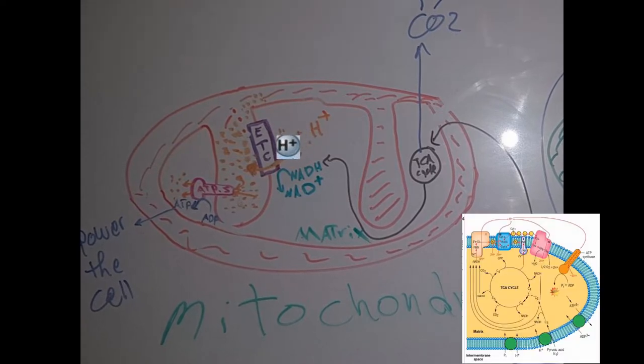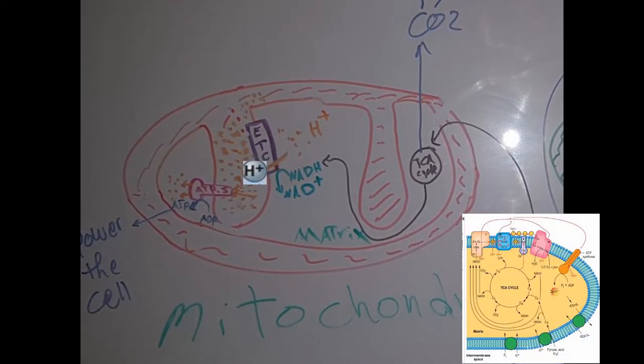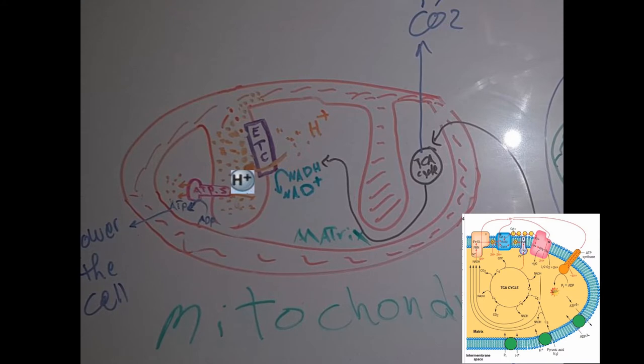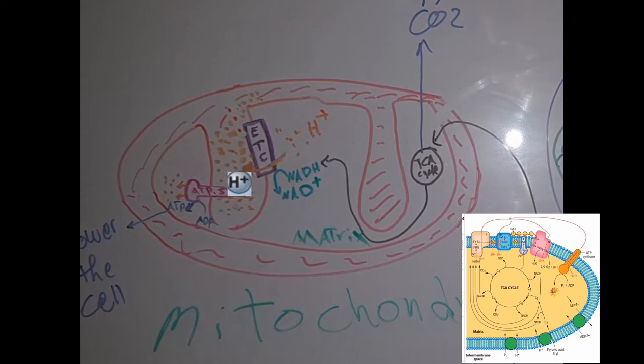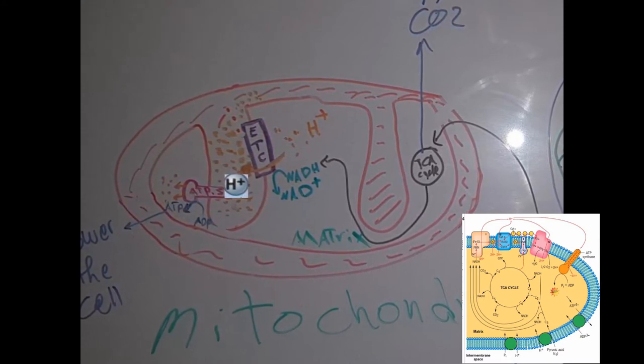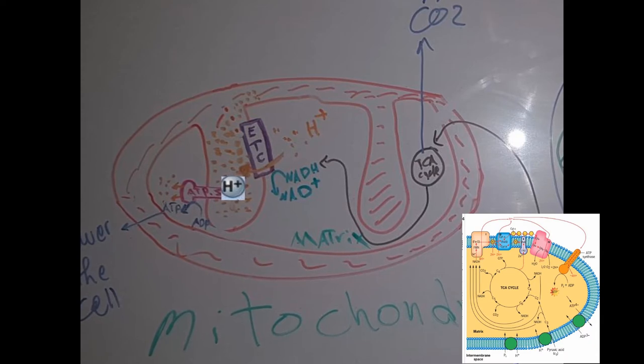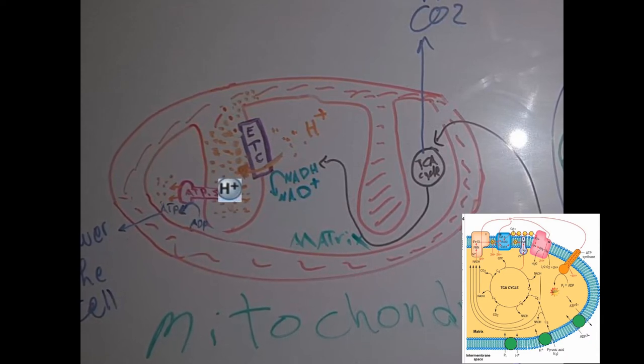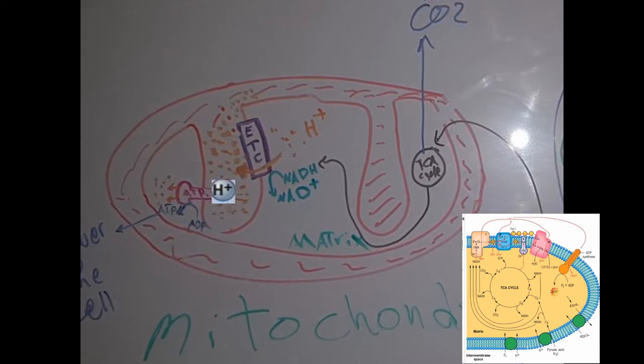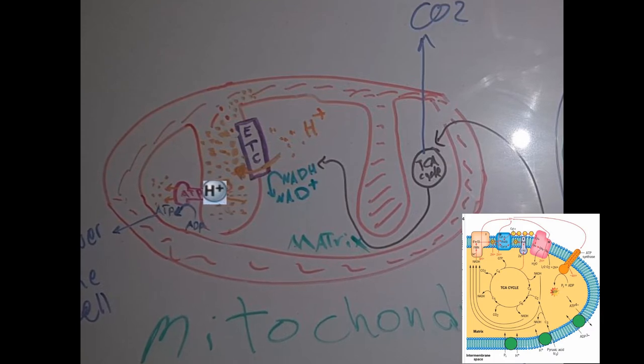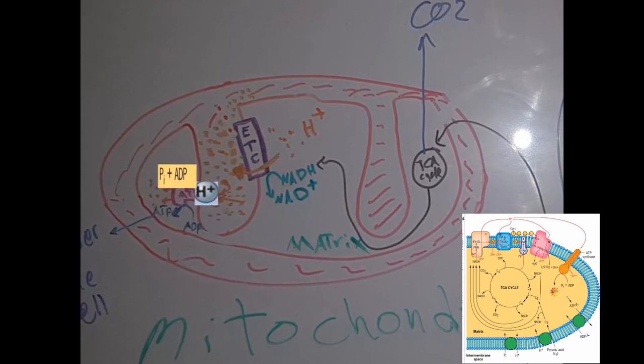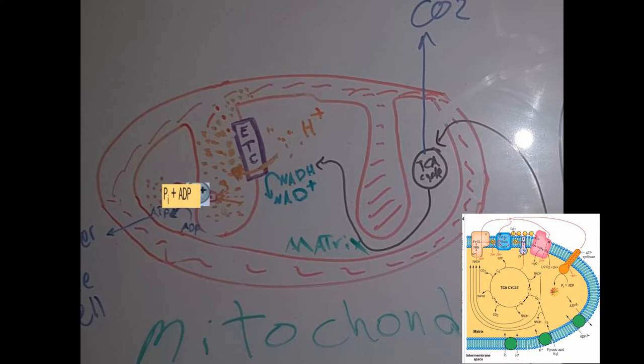The electron transport chain moves hydrogen protons from the matrix into the intermembrane space. This movement allows the concentration in the intermembrane space to be higher than the concentration in the matrix. Higher concentrations mean a movement from the higher concentration to the lower concentration.